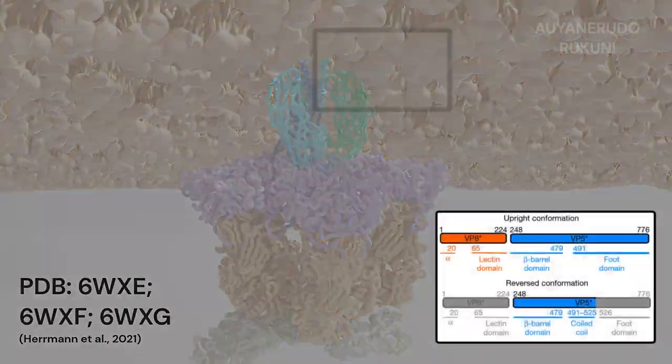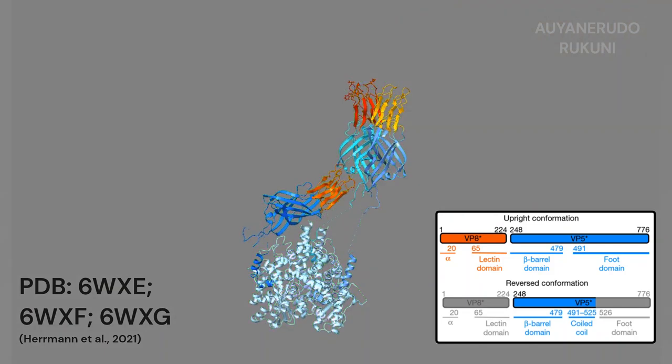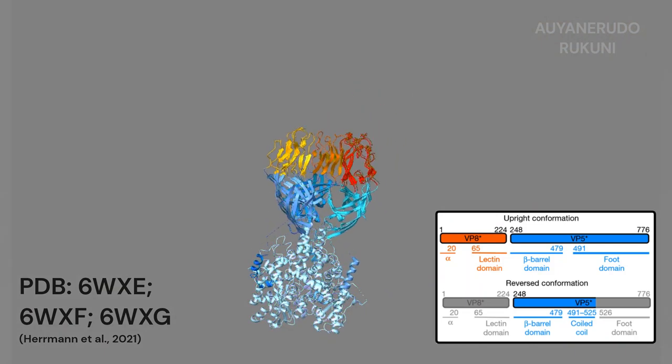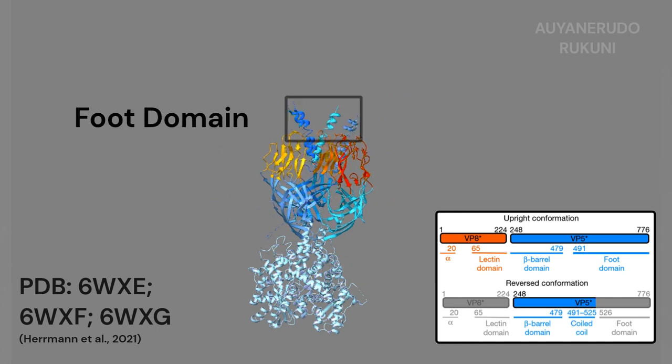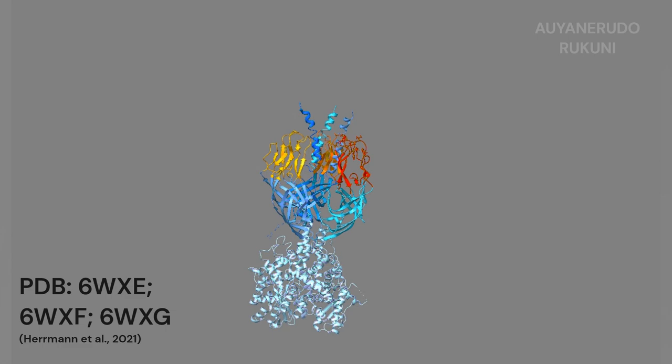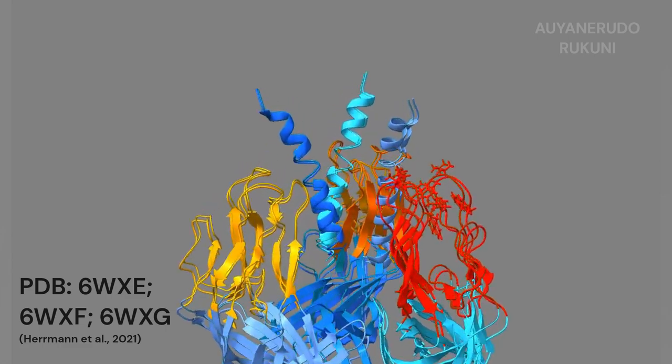There is dissociation of the VP8 lectin domains from VP5, followed by rearrangement and fold-back of the VP5 beta-barrels which thrusts the foot domain outwards. This forms a highly stable trimer consisting of three beta-barrels surrounding a central triple helical coiled coil.